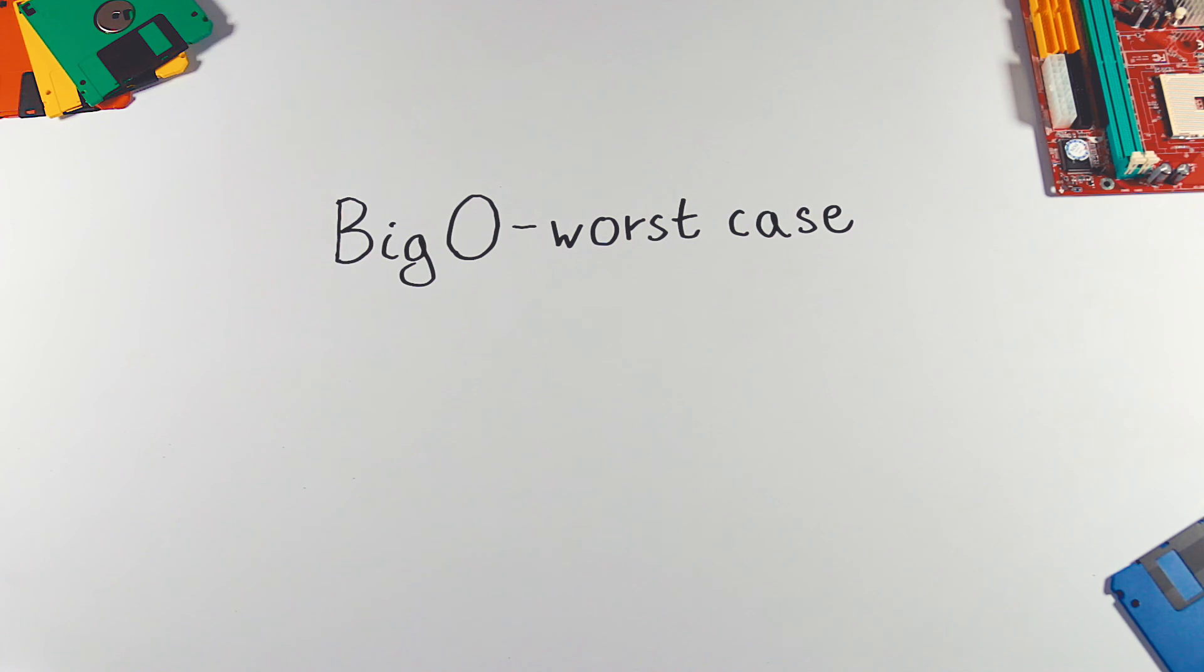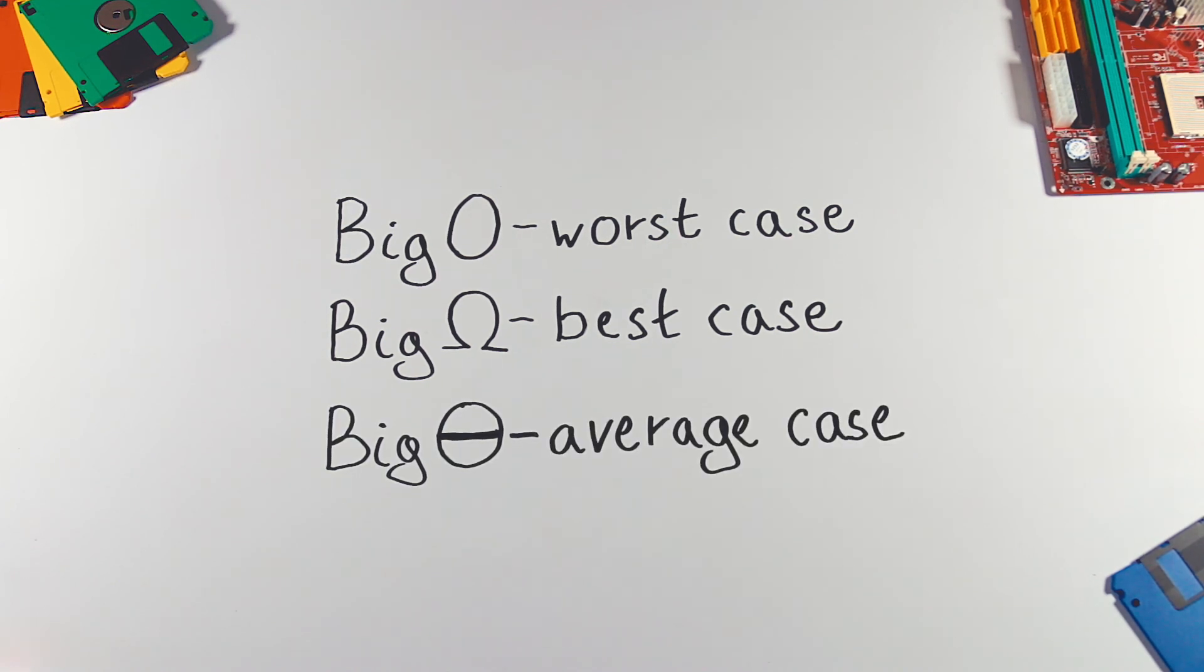Big O notation is sometimes used with a combination of two other notations. Big Omega, which stands for best case scenario, and Big Theta, which stands for average case scenario.